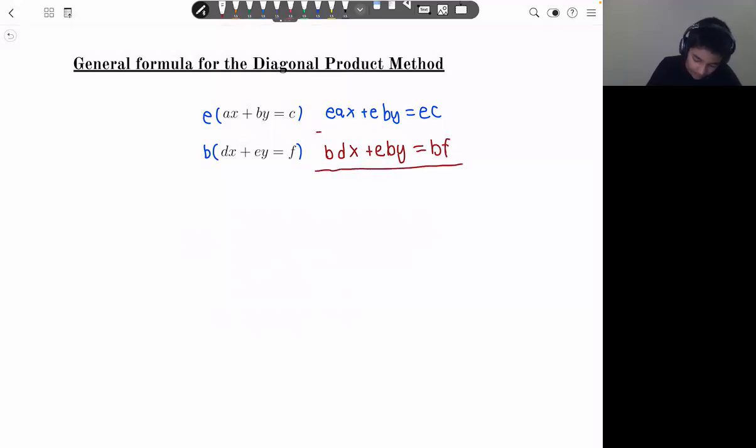And we get ea minus bd times x. And eby minus eby is just zero. So that's just zero. We don't care about it. Equal to ec minus bf. And that means that x is equal to ec minus bf over ea minus bd.